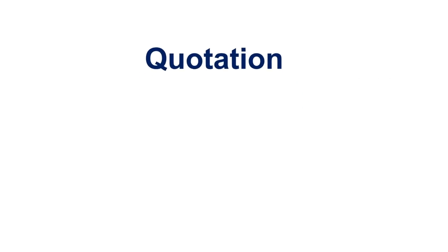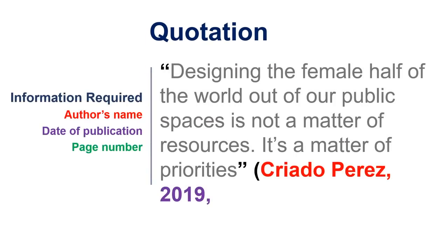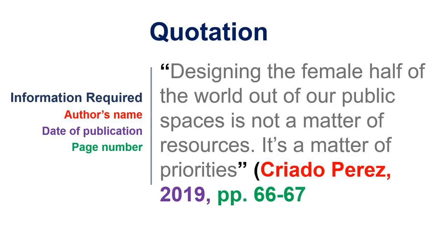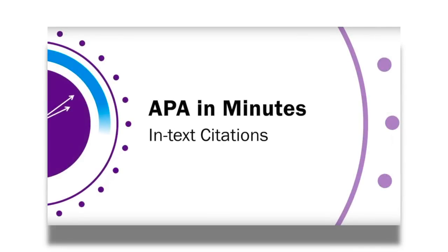If citing a quotation from a book in the body of your paper, be sure to also include the page number where the quote was found. Add a P followed by a period and the page number. If your quote spans multiple pages, add PP followed by a period and then the page numbers. Finish in parentheses and conclude with a period. For more on in-text citations, watch our video linked in the description.